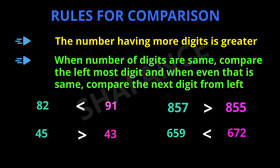These two rules are used for comparison of numbers. As we have seen in the counting video, the number which occurs later in the counting is greater than the number which occurs early. As we proceed in counting, the number of digits keeps on increasing, so the number with more digits is greater. In counting, we first increase the rightmost place digit, so the leftmost digit is increased at a later stage. This means that when the number of digits are the same, the number having the higher leftmost digit is greater, and if that is also the same, we proceed to the next digit from the left.